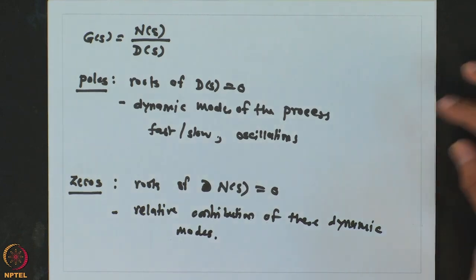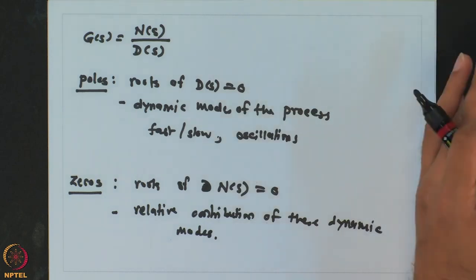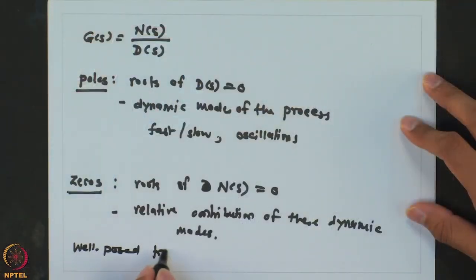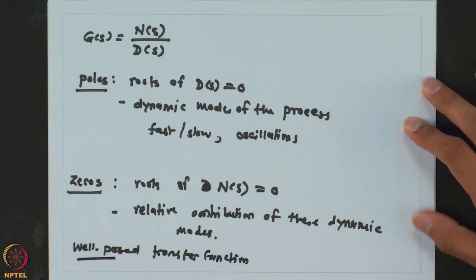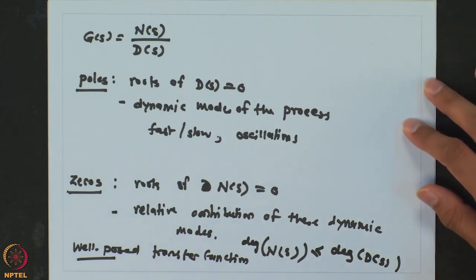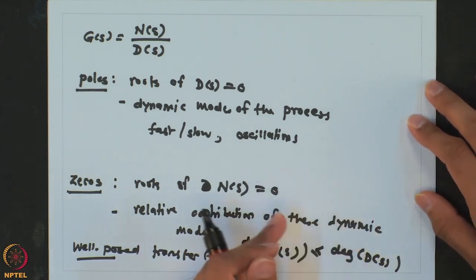Essentially the zeros tell you which dynamic modes are dominant, whether all dynamic modes have the same contribution to the output, or whether some have opposing contributions. For any well-posed, physically realizable transfer function, the degree of the numerator polynomial should be less than or equal to the degree of the denominator polynomial. If the numerator degree is greater than the denominator, the process is not physically realizable.